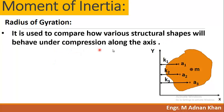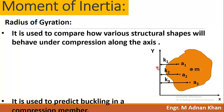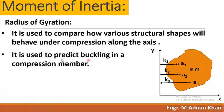Radius of gyration is used to compare how various structural shapes behave under compression along the x-axis and y-axis. We need to know the behavior of structural members under compression along these two axes, and it is used to predict buckling in a compression member.